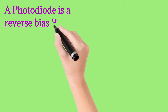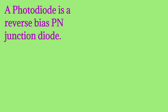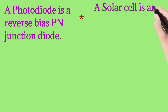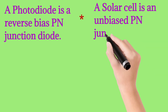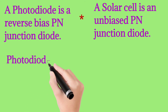The next point: a photodiode is a reverse biased p-n junction diode, where the p-type material is connected to the negative terminal of the battery and the n-type material is connected to the positive terminal. A solar cell, on the other hand, is an unbiased p-n junction diode — no power supply is connected to it.